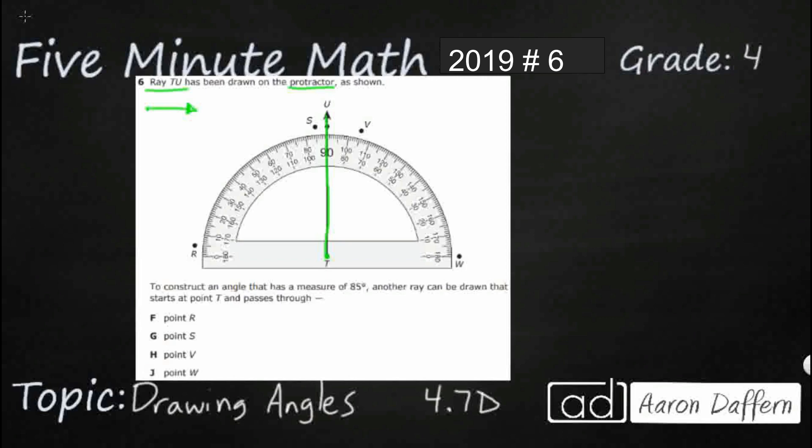So, we need to construct an angle that has a measure of 85 degrees. That's what we're looking for. We need to draw another ray that starts at T, and then it's going to go through either R, S, V, or W.